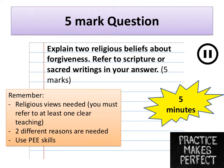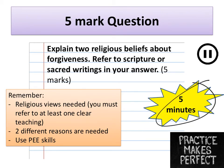Time to try another one of our exam questions — this is a five-mark question. It says: explain two religious beliefs about forgiveness. Refer to scripture or sacred writings in your answer. For a five-mark question, remember that we need to do two PEE paragraphs. Two different reasons are needed and religious views need to be used. It doesn't matter if you refer to the same religion in both paragraphs, and as long as the two views and teachings given are different, it doesn't matter if you are on the same side of the argument. Spend five minutes on this question — pause the video and take five minutes to write your answer.